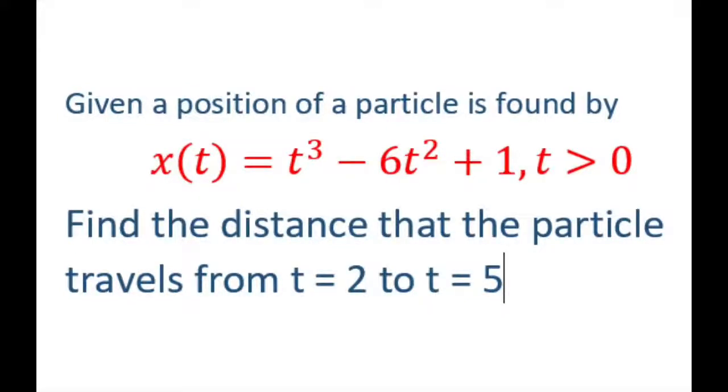Hi everyone. Given a position of a particle, we're going to find the distance that the particle travels from t equals 2 to t equals 5. So the first thing we're going to do is take the derivative.